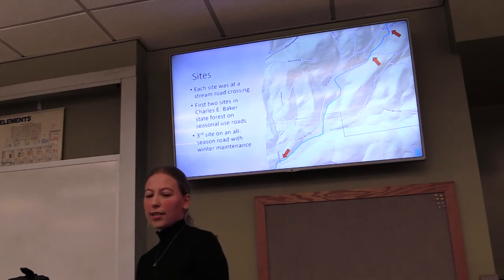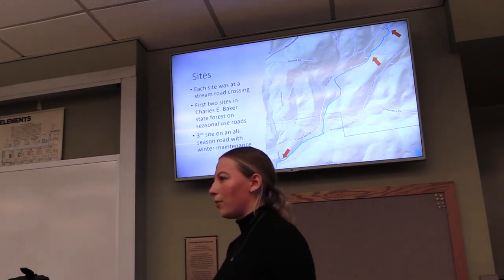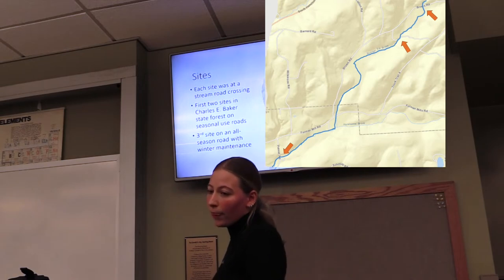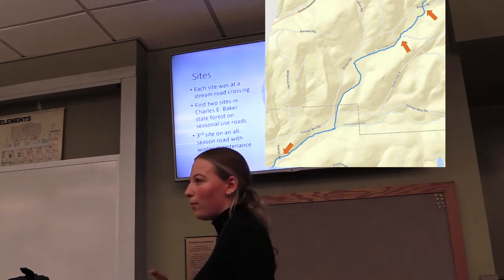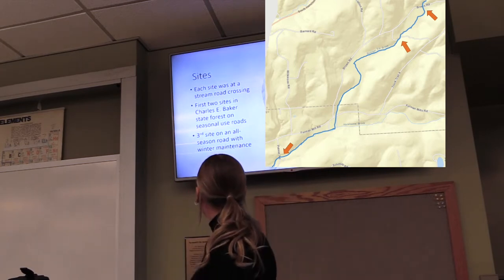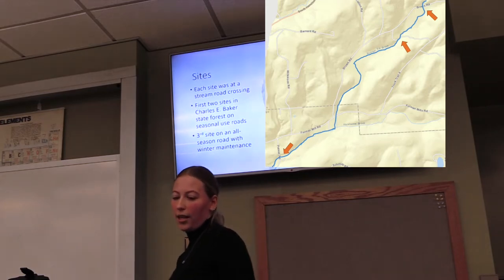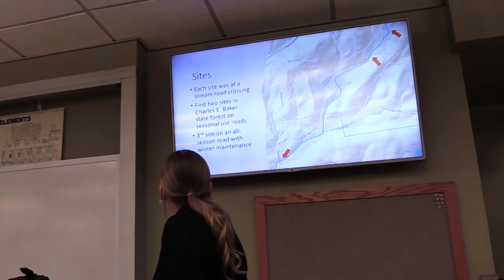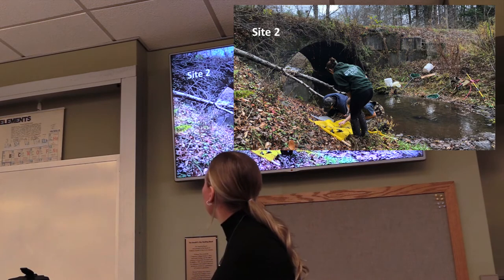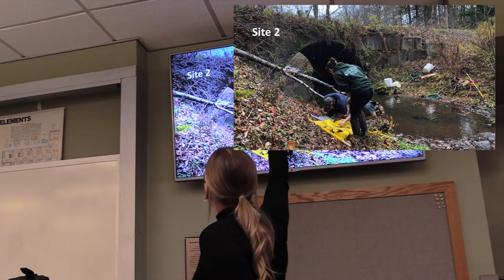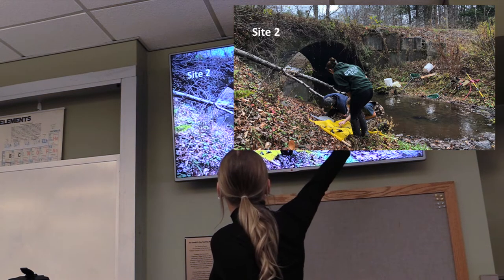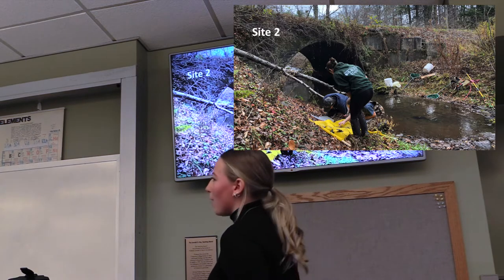Here's a little more background on the sites. Each site was at a stream road crossing, chosen for accessibility. The first two sites were in the State Forest as seen on the other map, and those two are on seasonal roads with no winter maintenance. The third site is on a regular road with seasonal maintenance. It is also on Hanson Brook, whereas the other two were on the number six brook. This picture gives a better representation of what each site looked like — the road is up top, the stream flows below, and you can see the electrofishing backpack and macroinvertebrate sampling equipment.